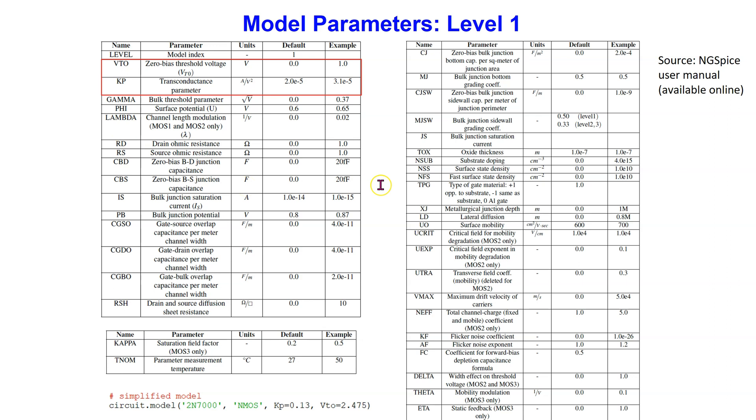In introductory electronics textbooks, typically only the values of Kp and Vto are specified and can be explicitly set in the model. It is okay to leave other parameters at their reasonable default values.